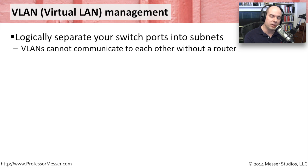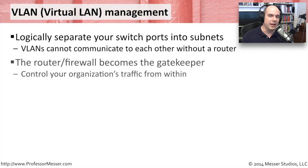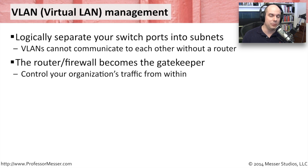You might want to put the HR department on one VLAN. You might want to put the shipping and receiving department on a completely different VLAN. So now you're allowing your firewall or your router — or your firewall that is acting as a router — to be the gatekeeper to prevent the HR people from directly communicating to the folks in shipping and receiving and vice versa.